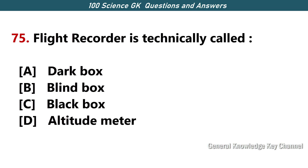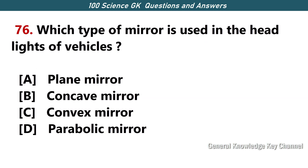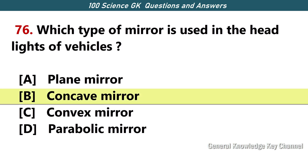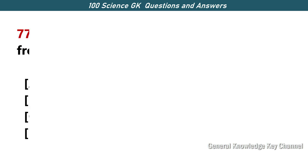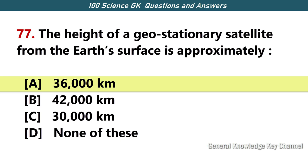A flight recorder is technically called — Answer B — black box. Which type of mirror is used in the headlights of vehicles? Answer B — concave mirror. The height of a geostationary satellite from the Earth's surface is approximately — Answer A — 36,000 kilometers.